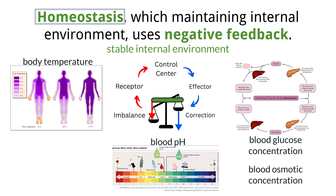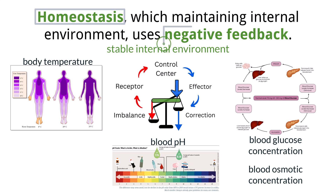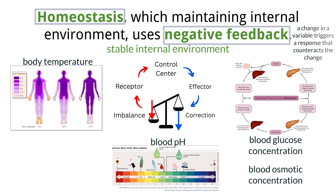When these variables fluctuate too far from their set points, our bodies initiate responses to bring them back into balance. Our bodies do this by using negative feedback. Negative feedback is a control mechanism where a change in a variable triggers a response that counteracts the change, helping return values to the original state and promote stability.